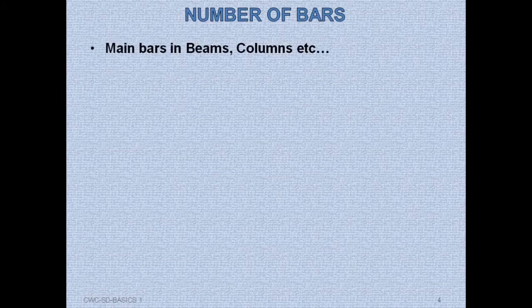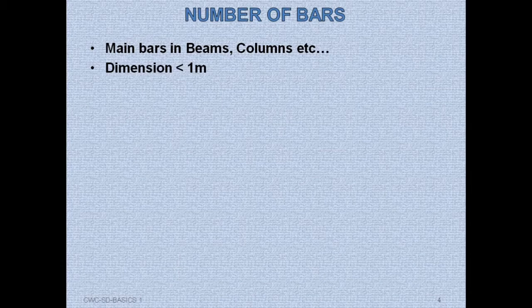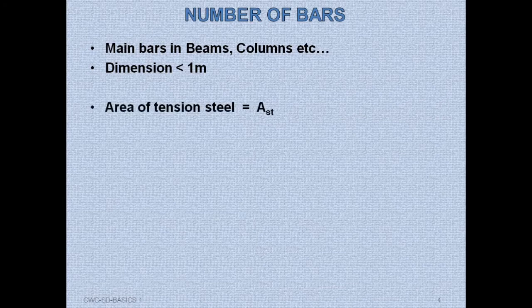Now let's see about the number of bars. Main bars in beams and columns are usually expressed in numbers. Reinforcement in structures with small dimensions — usually less than or around 1 meter — are also expressed in numbers. In such cases it won't be difficult to place the bars if we mention the number of bars. Let's move on to the calculation.